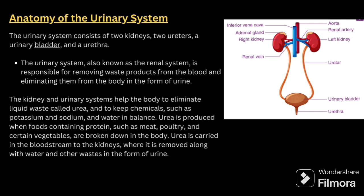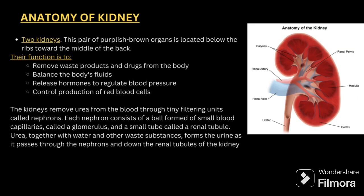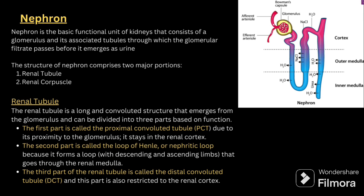Next, we talk about the anatomy of the kidney. We have two kidneys — a pair of purplish-brown organs located below the ribs towards the middle of the back. Their functions include removing waste products and drugs from the body, balancing fluids, releasing hormones to regulate blood pressure, and controlling production of red blood cells. The kidneys remove urea from the blood through tiny filtering units called nephrons. Each nephron consists of a ball of small blood capillaries called the glomerulus and a small tube called the renal tubule.